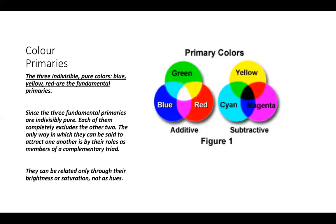Red, yellow and blue are the fundamental primary colours — the absolute building blocks of where colour comes from. The thing that's really important to take on is that they are completely different to one another: there is nothing of yellow in blue, nothing of red in yellow, and nothing of red in blue — they are completely things on their own. They attract one another because they're in what's known as a complementary triad. The three together kind of work together; they complement one another because of their differences. There is no relationship between each of those colours — the only way they can be related is through brightness and saturation; the hues are completely different.